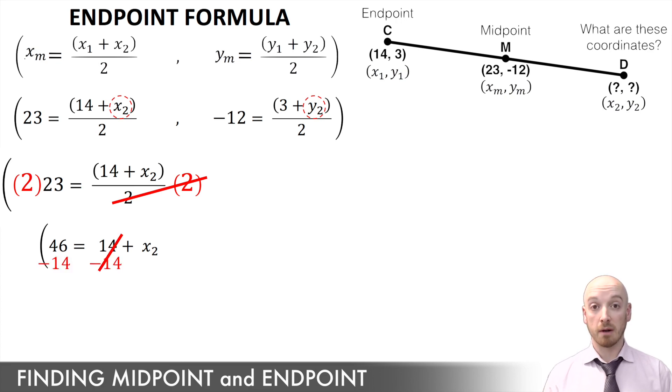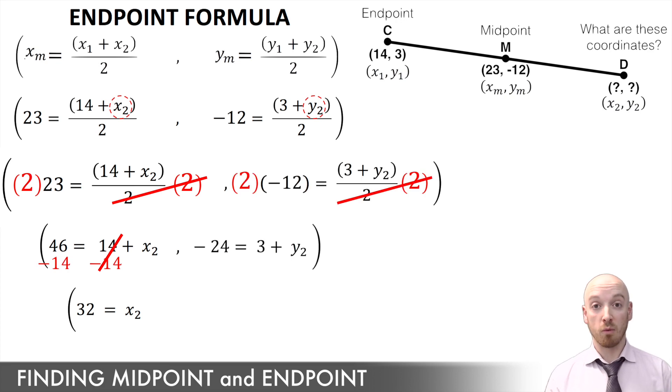Now that I've performed all those operations, what I'm left with is the x value for the endpoint that was missing. I'm going to go ahead and do the exact same thing on the y side to find the missing y value.